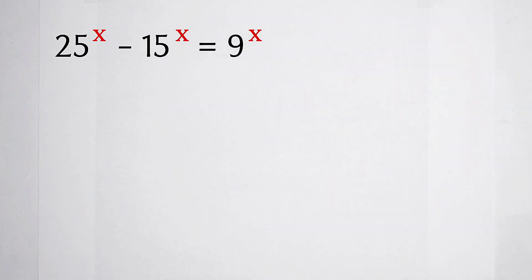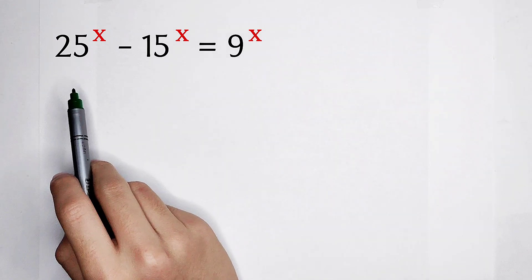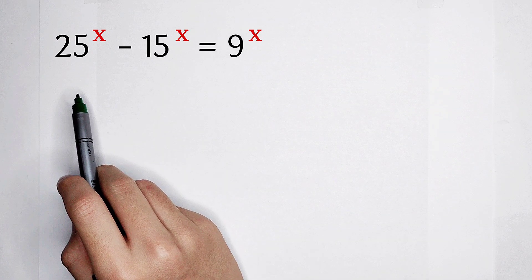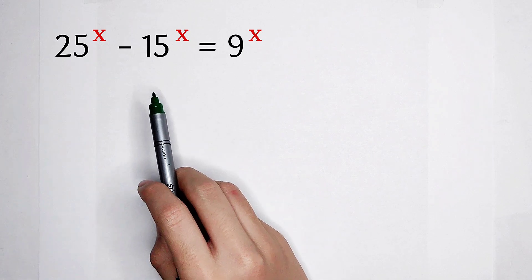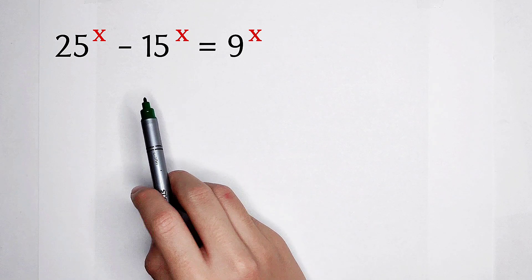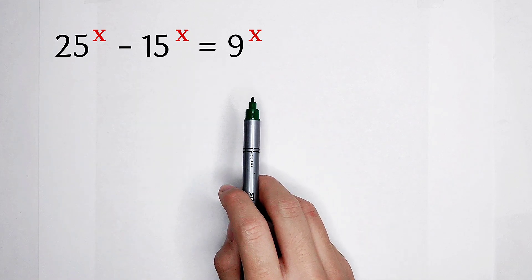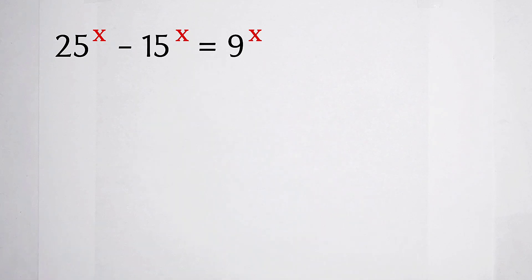I think you have noticed that 25 is 5 squared, and 15 is 5 times 3, and 9 is 3 squared.